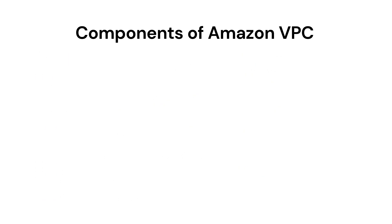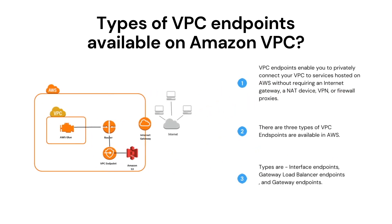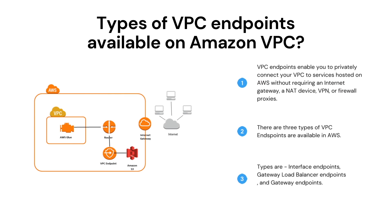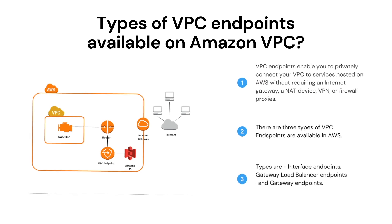Next question is: what types of VPC endpoints are available on Amazon VPC? There are three types of endpoints available: Interface endpoints, Gateway Load Balancer endpoints, and Gateway endpoints. VPC endpoints are useful when a server or other resource wants to access any other AWS resource in a private network.